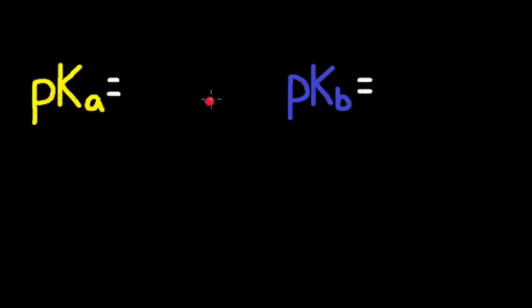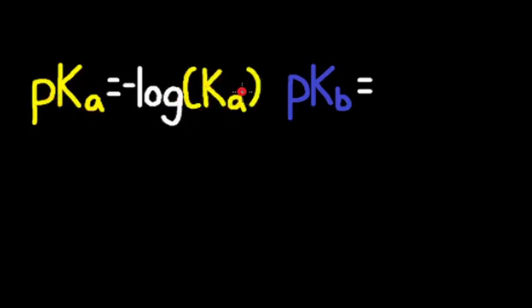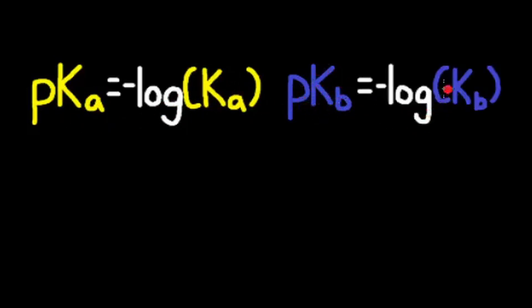pKa is equal to the negative log of Ka. The 'p' means take the negative log, so pKa means take the negative log of Ka. Similarly, pKb is equal to the negative log of Kb.